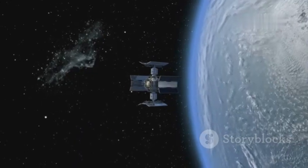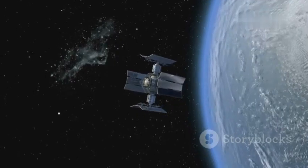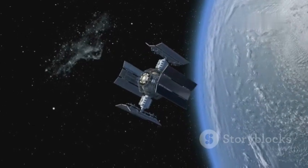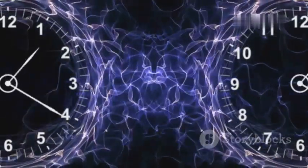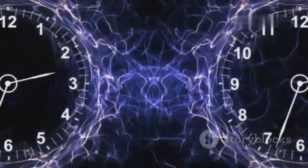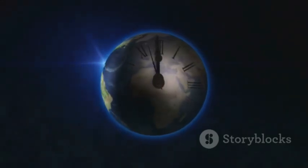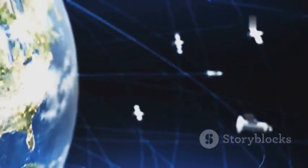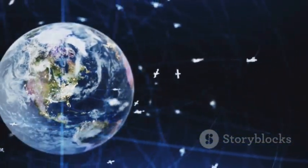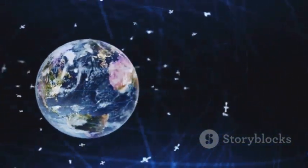GPS satellites orbit Earth at high speeds and are subject to both special and general relativistic effects. Time dilation due to their speed causes their clocks to run slightly slower than clocks on Earth, while the weaker gravity at their altitude causes their clocks to run slightly faster. To ensure accurate positioning, GPS satellites must take these relativistic effects into account.